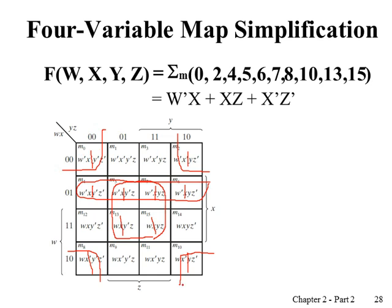For the four corners group: checking the column values, Z does not change and its value is zero, so we have Z̄ (not Z). Between rows — the first and last row — W changes but X does not change, and the value of X is zero, so we have X̄ (not X). Therefore, the four corner cells are represented by the expression X̄Z̄.